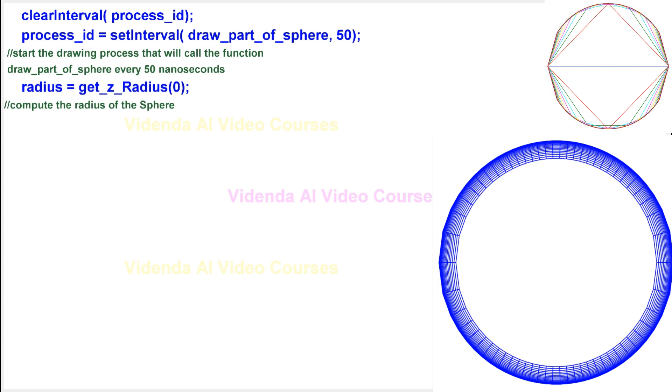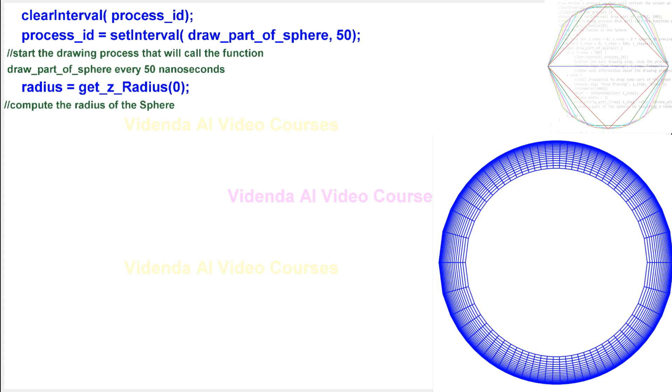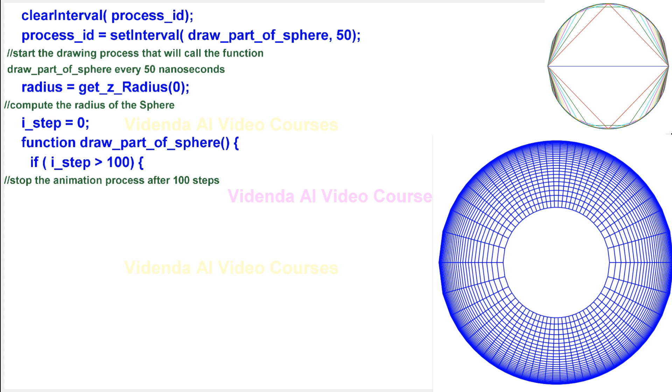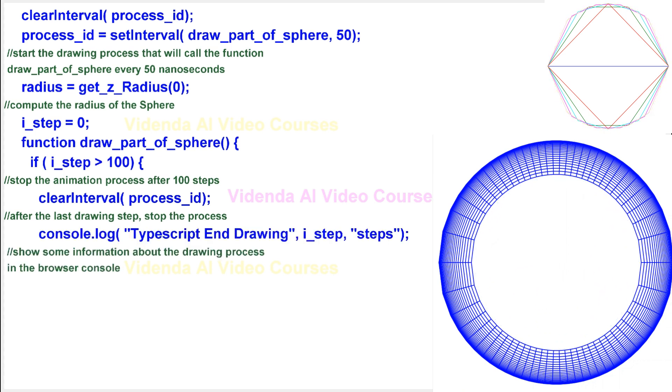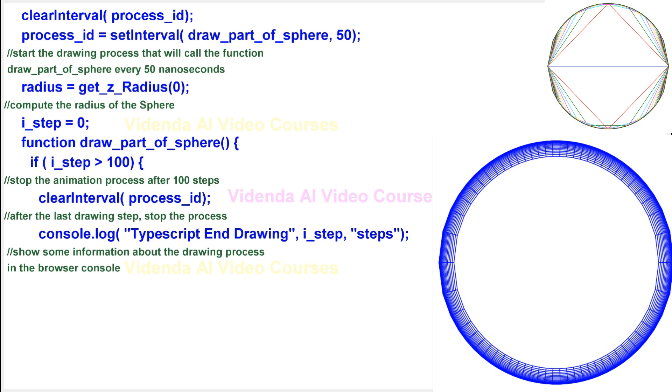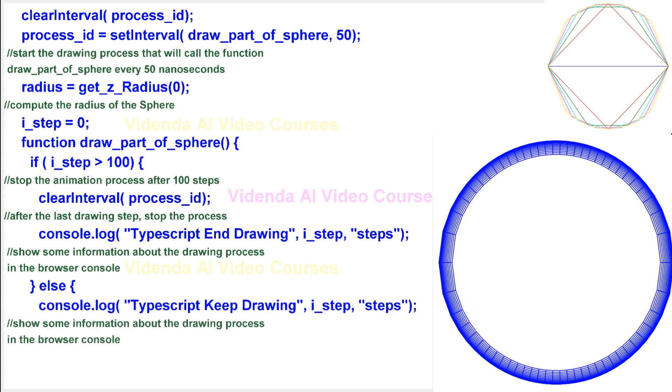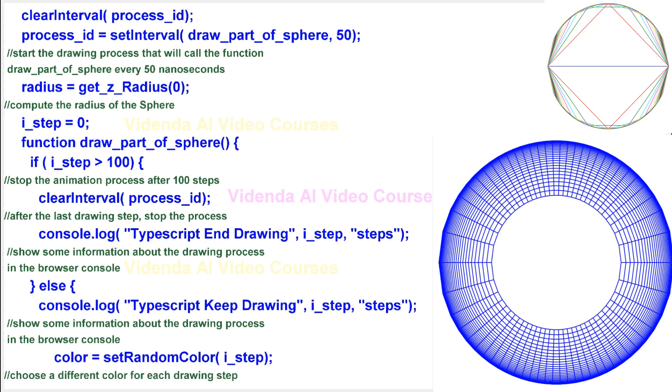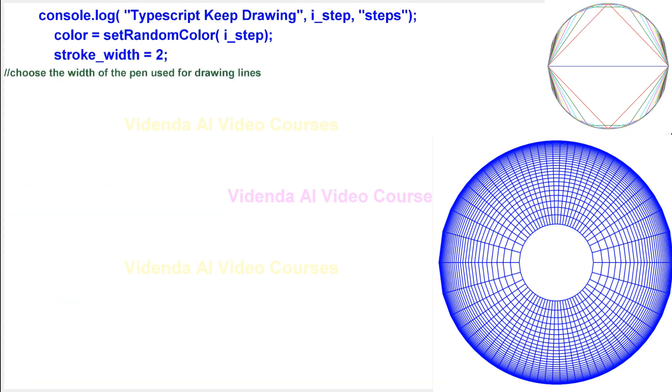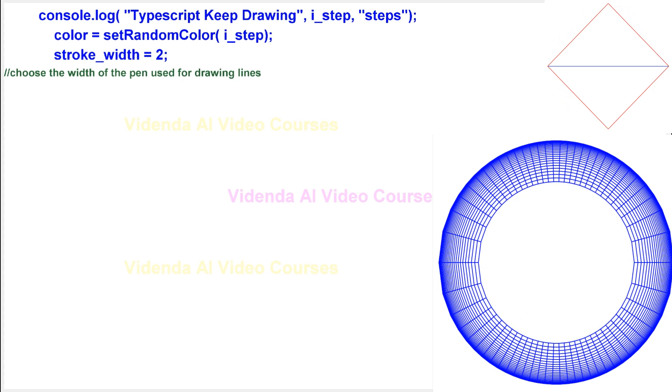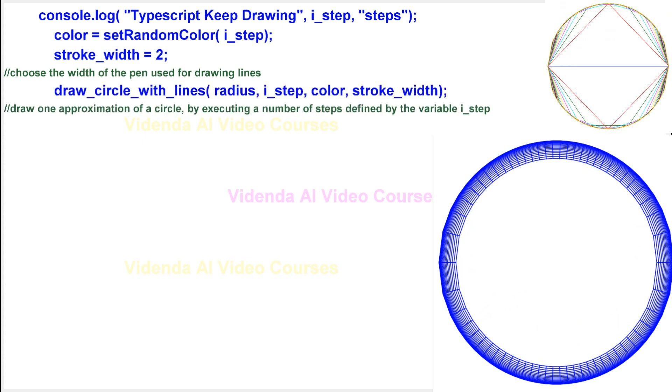Compute the radius of the sphere. Stop the animation process after 100 steps. After the last drawing step, stop the process. Show some information about the drawing process in the browser console. Choose a different color for each drawing step. Choose the width of the pen used for drawing lines. Draw one approximation of a circle, by executing a number of steps defined by the variable i underscore step.